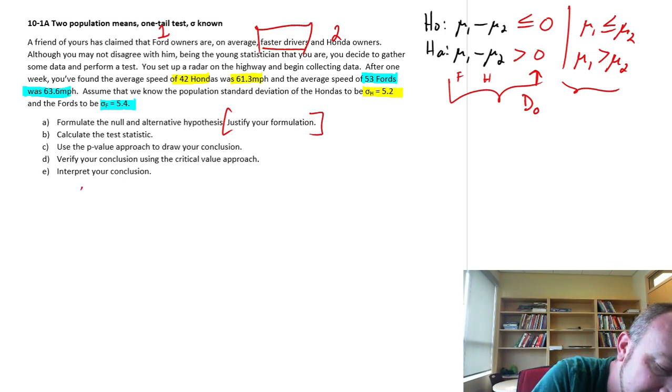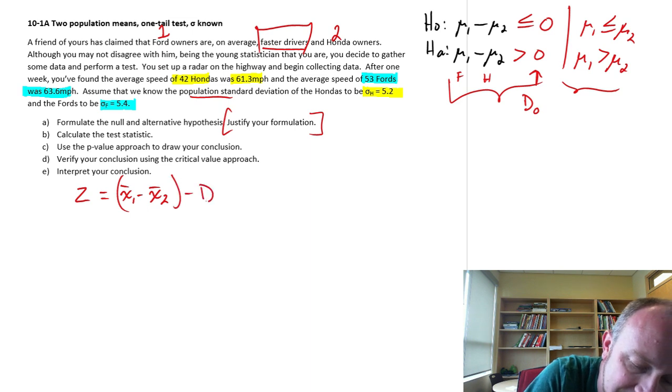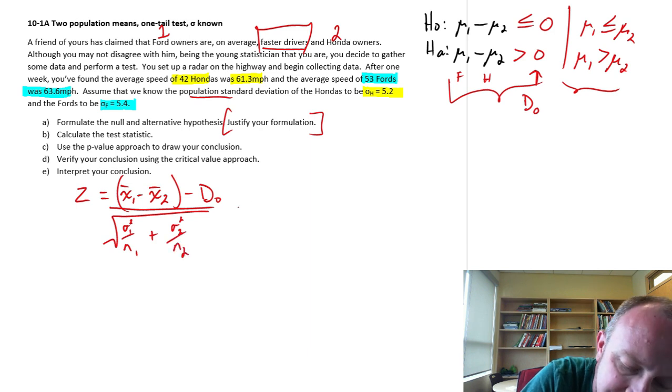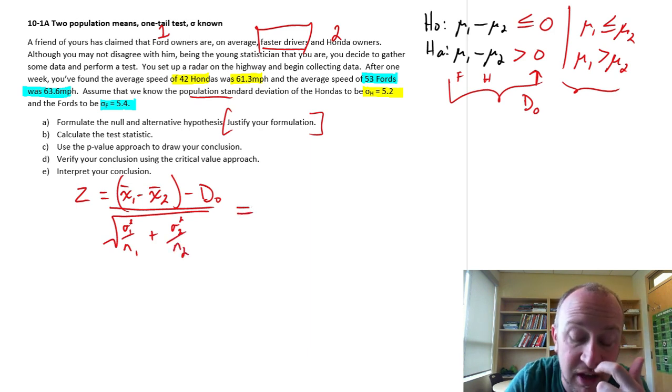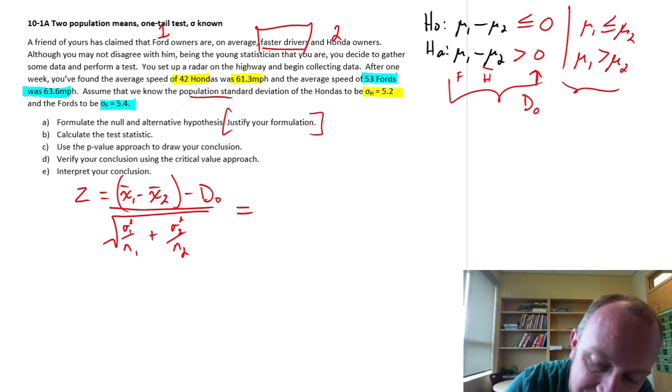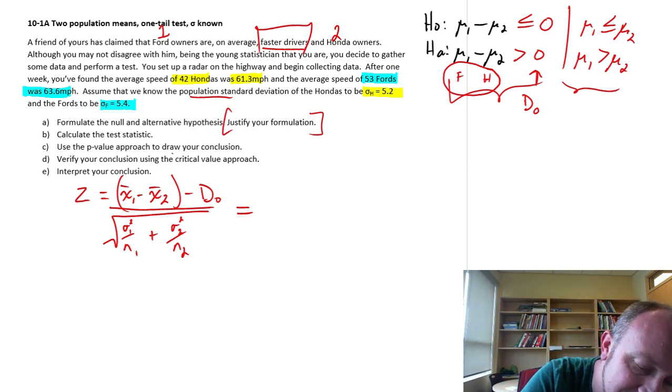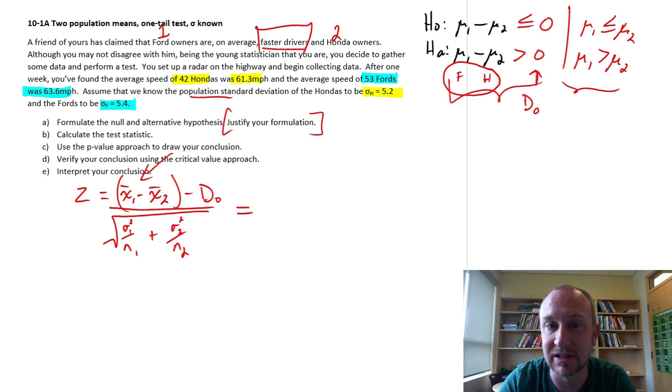Okay, so now let's get into our test statistic. So this is going to be a Z test because we know we have the population standard deviations. So this is going to be Z equals X bar 1 minus X bar 2 minus that hypothesized difference divided by our standard error here, which is sigma 1 squared over N1 and sigma 2 squared over N2. Okay, so now I'm just going to plug in the numbers. And notice here, having formulated this as Ford minus Honda, that now determines how I enter those values into the formula.